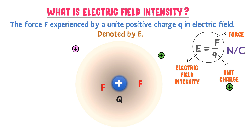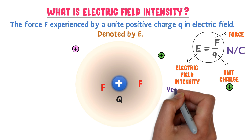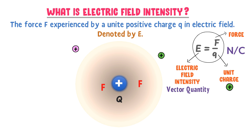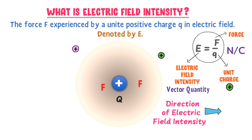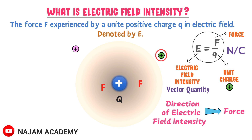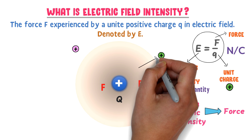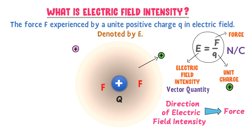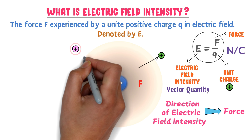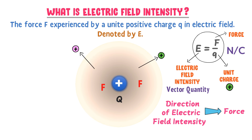Force is a vector quantity, so electric field intensity is also a vector quantity. The direction of electric field intensity is the same as the direction of force. For example, the direction of force on this test charge is outward, so it is also the direction of electric field intensity.